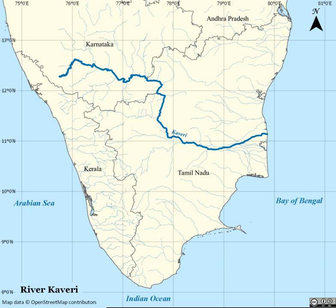Central Water Commission Chairman S. Masood Hussain will head the CWMA, and Chief Engineer of the Central Water Commission Naveen Kumar will be the first chairman of the CWRC. While the CWMA is an umbrella body, the CWRC will monitor water management on a day-to-day basis, including the water level and inflow and outflow of reservoirs in all the basin states.